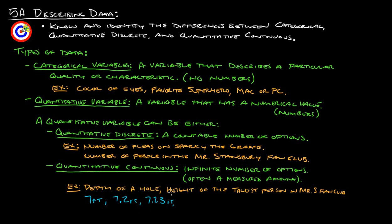Also, another example of that would be the height of the tallest person in the Mr. Stansbury Fan Club. That's considered quantitative continuous because that height could be measured to any degree, any decimal point. So that's why that's considered quantitative continuous.